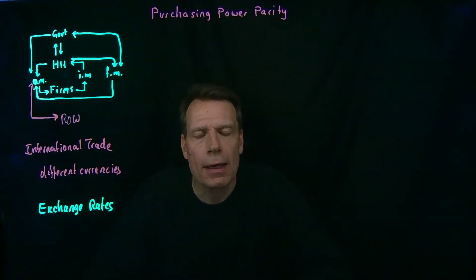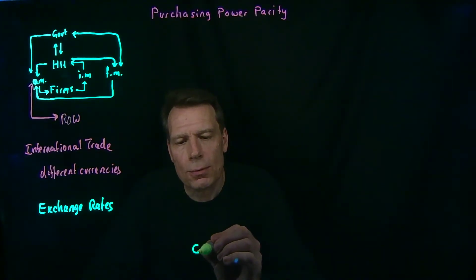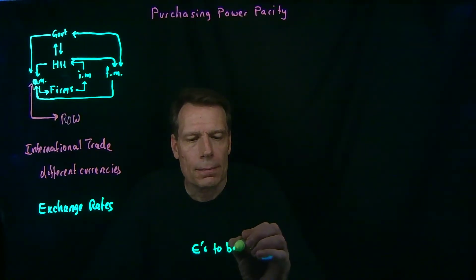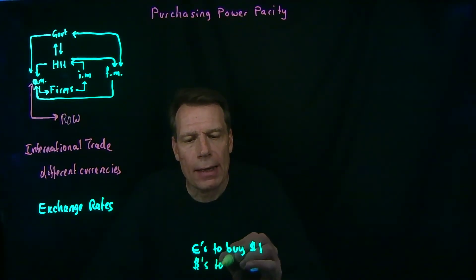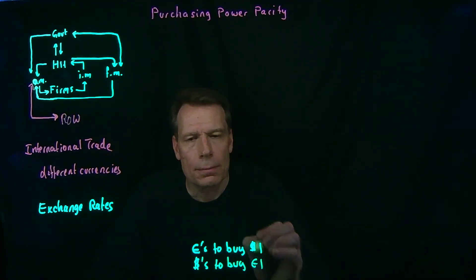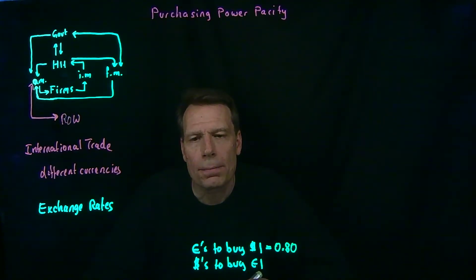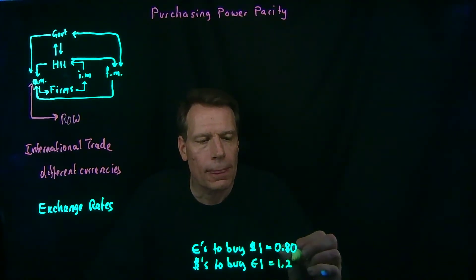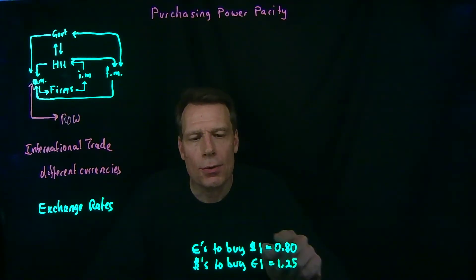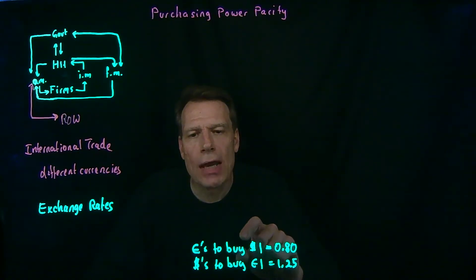Think about the exchange rate between the dollar and the euro. There are two ways we could express it: how many euros does it take to buy one dollar, or how many dollars does it take to buy one euro. Suppose it takes 0.8 euros to buy a dollar. The second number is just the inverse of the first — 1 divided by 0.8 equals 1.25. So if it costs 0.8 euros to buy a dollar, it'll cost $1.25 to buy one euro. These are two equivalent ways of expressing the exchange rate between dollars and euros.